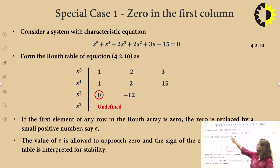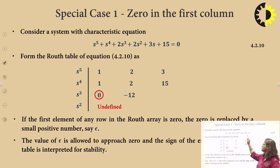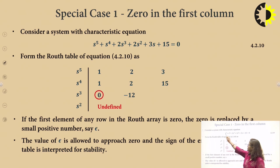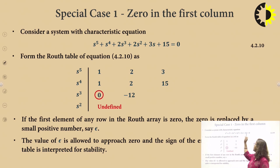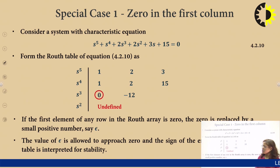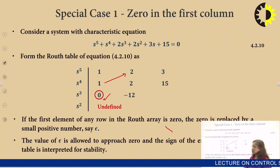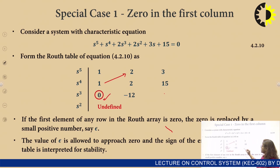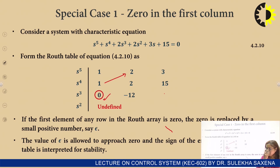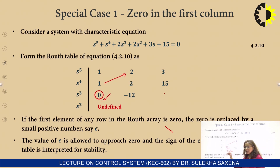Consider the function s⁵ + s⁴ + 2s³ + 2s² + 3s + 15. The s⁵ row has coefficients 1, 2, 3 and the s⁴ row has 1, 2, 15. This is a special case wherein the first element of a row is 0, whereas the complete row is not 0. The next element would be 3 − 15 = −12. In this case there are two methods to handle the zero element.